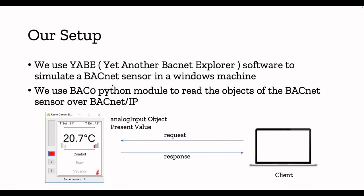This is going to be our setup. If you want to learn something, you always need to get your hands dirty. We are going to simulate a BACnet device. In our next video I'll show you how to do all those things — reading data from a BACnet simulator. We will use a software called ABE — Another BACnet Explorer — a free software available for both Windows and Linux. We'll install it on a Windows machine and it will simulate a simple room monitoring device with temperature data.